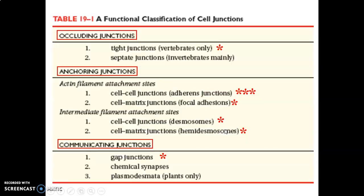Occluding junctions include tight junctions, which are mainly found in vertebrates. Anchoring junctions ensure cell-to-cell or cell-to-matrix connections. Cell-to-cell anchoring junctions include adherens junctions, attaching onto actin filaments. Cell-to-matrix junctions include focal adhesions. For intermediate filaments, cell-to-cell we have desmosomes and cell-to-matrix we have hemidesmosomes. Under communicating junctions we mainly have gap junctions.